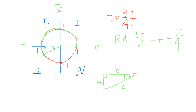Sine T equals to... remember the definition? Sine T equals to opposite side over hypotenuse. Tangent is not opposite over hypotenuse — that's sine. Sine equals to opposite over hypotenuse.